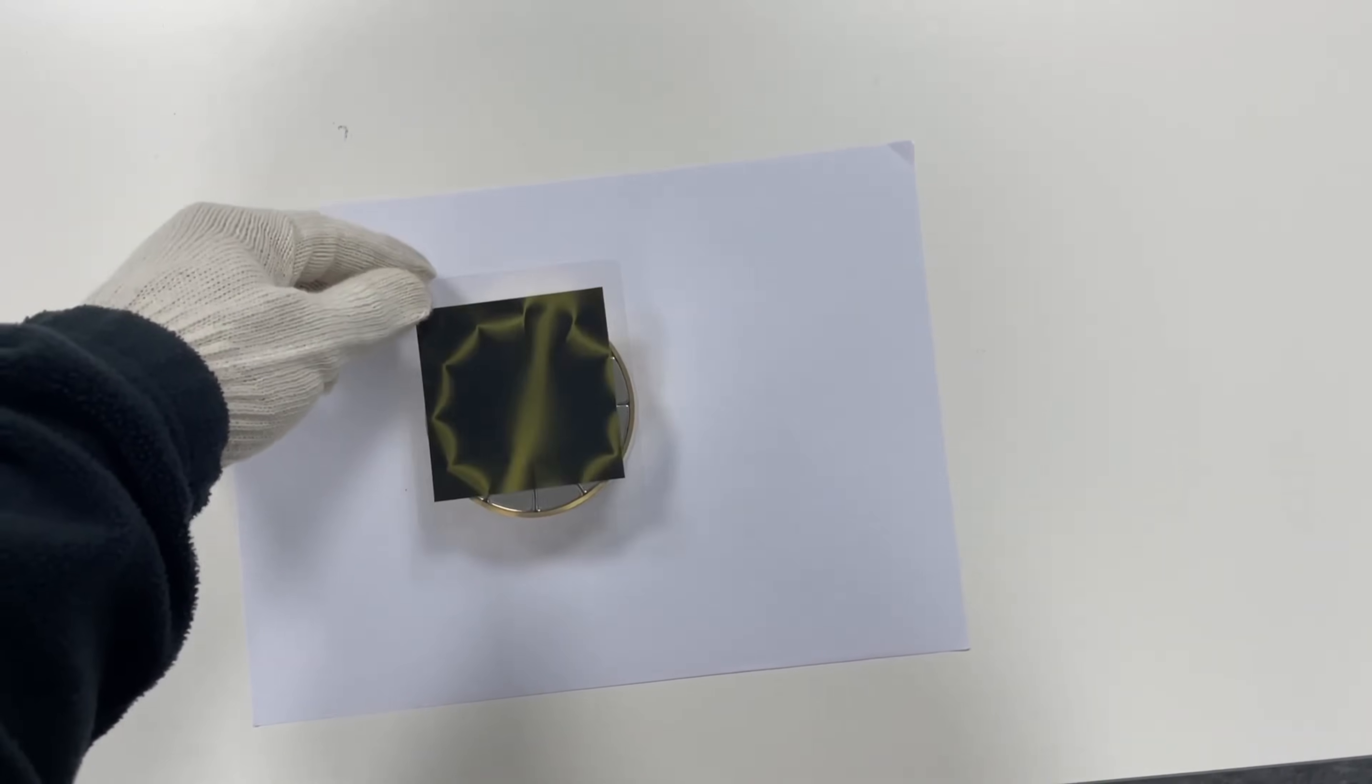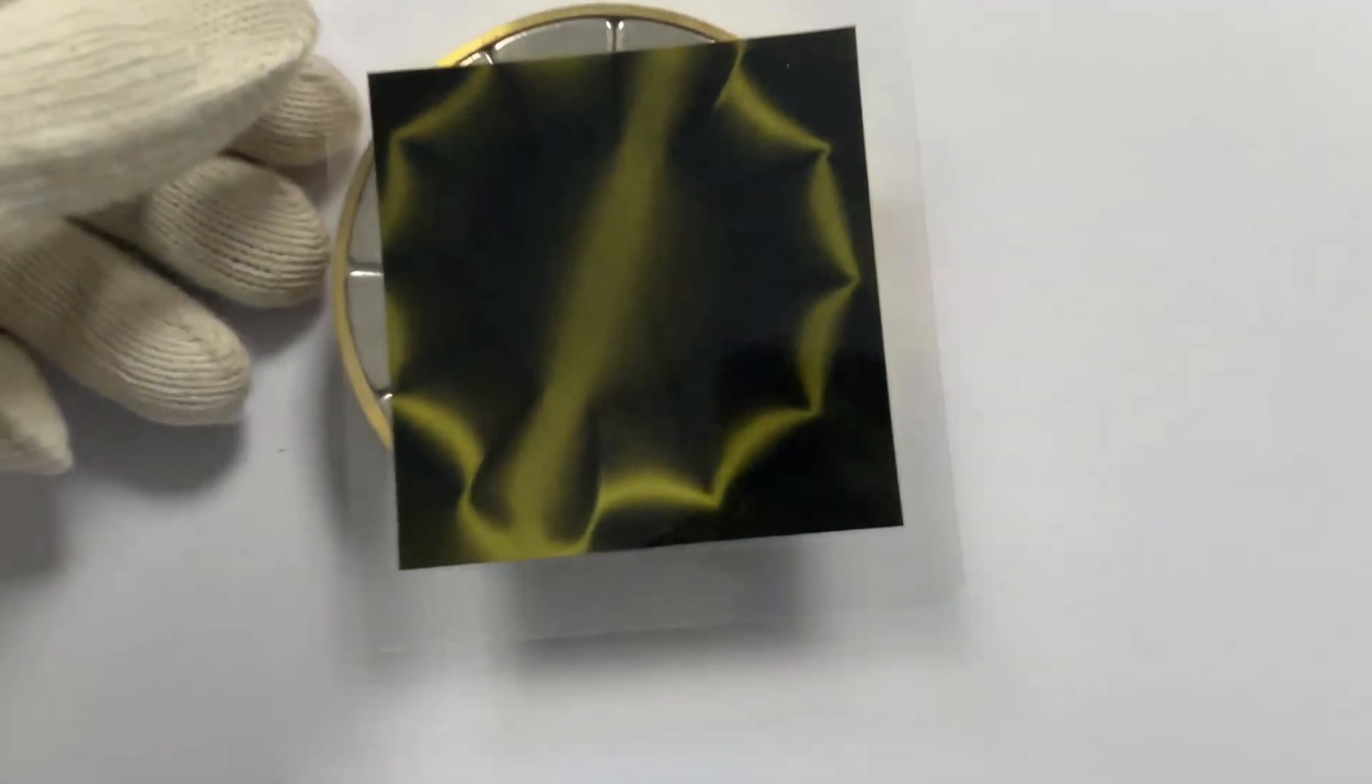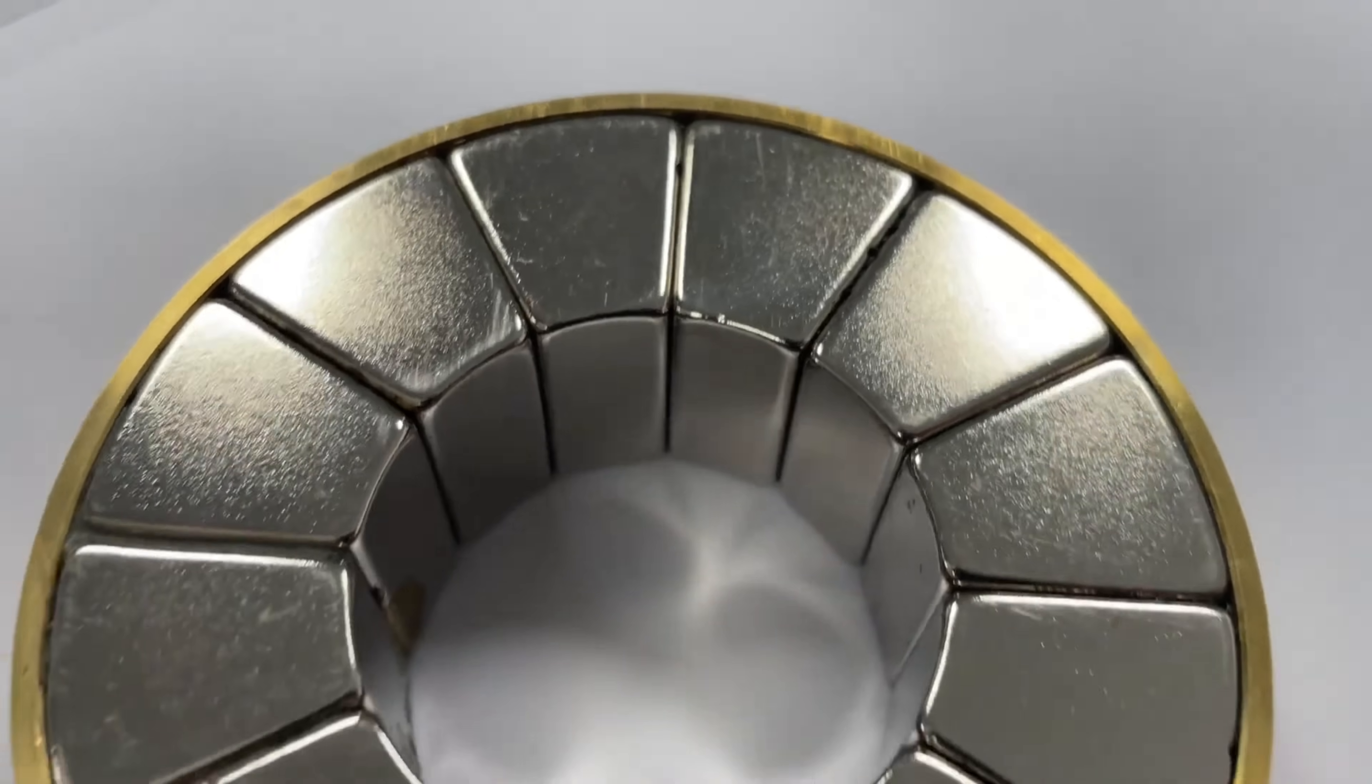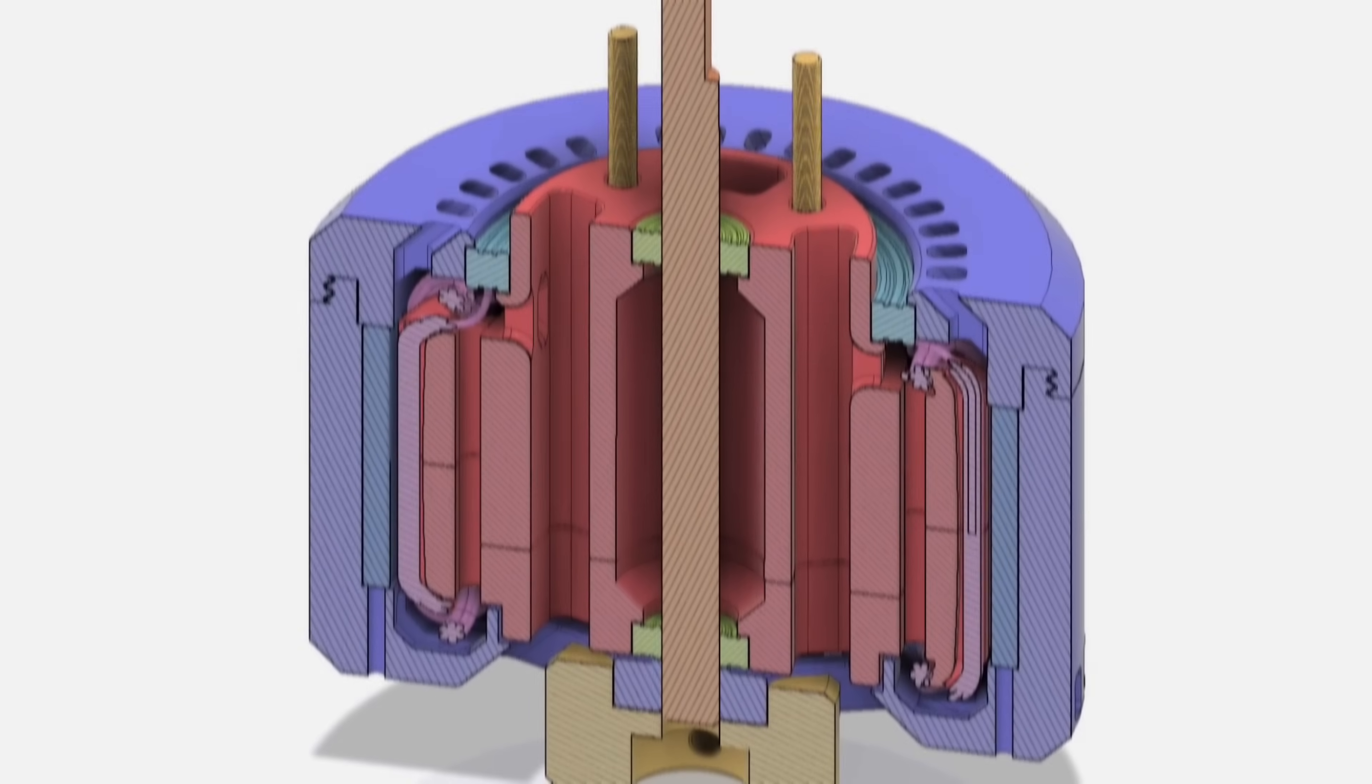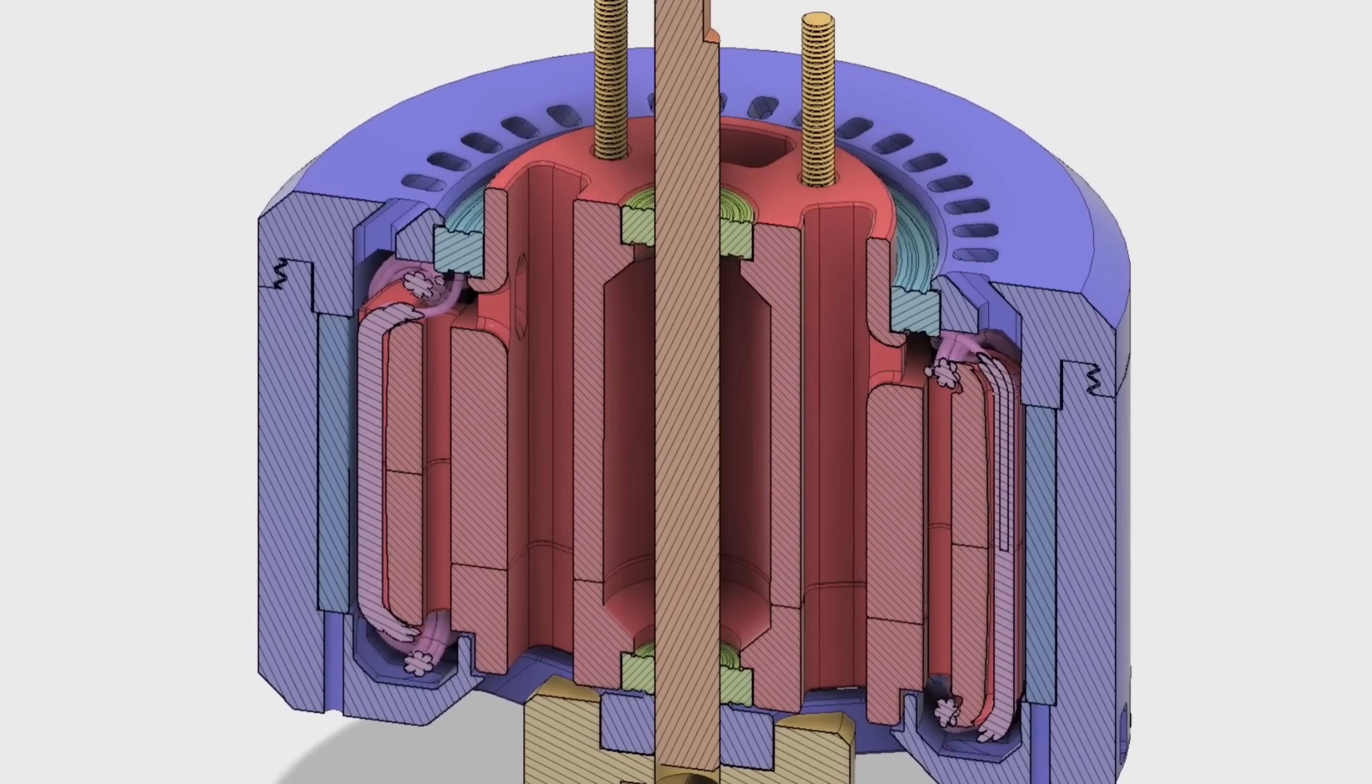All electric motors inevitably dissipate some energy as heat, resulting in less than 100% efficiency. Losses occur due to mechanical friction, electrical resistance within windings, eddy current effects, and hysteresis.